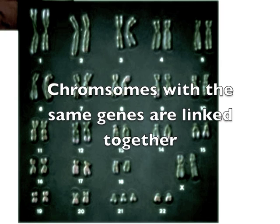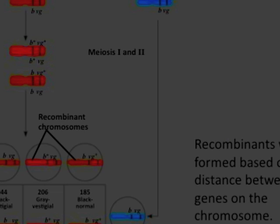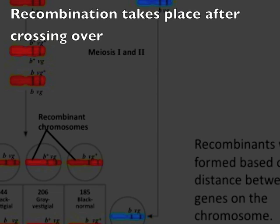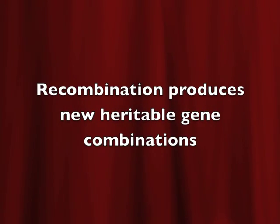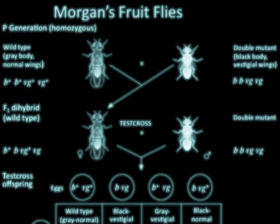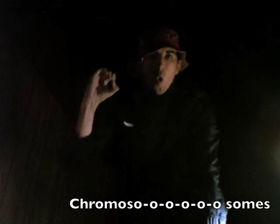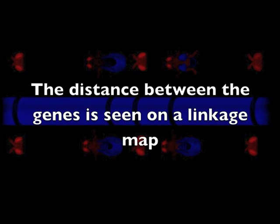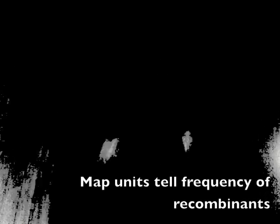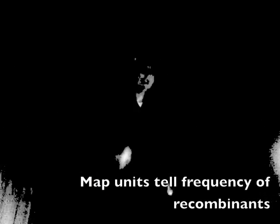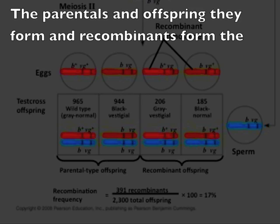Chromosomes with the same genes are linked together. Recombination takes place after crossing over. The parentals, offspring they form, and recombinants form the chromosomes. The distance between the genes is seen on a linkage map; map units tell the frequency of recombinants, the parentals, offspring they form, and recombinants form the chromosomes.